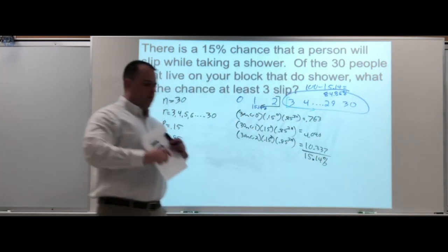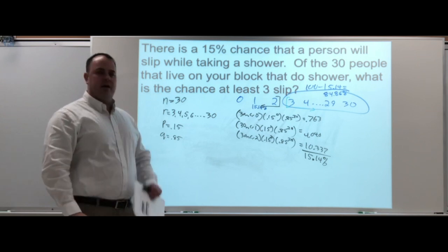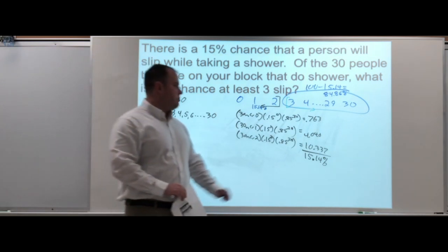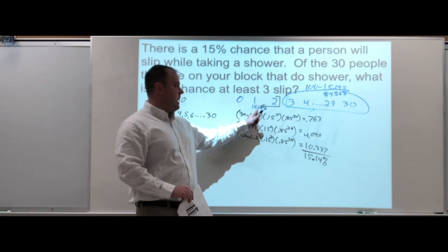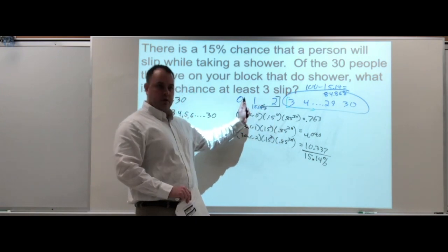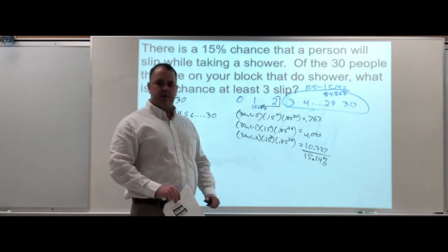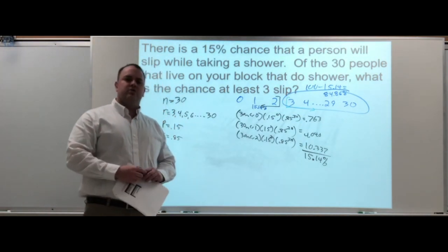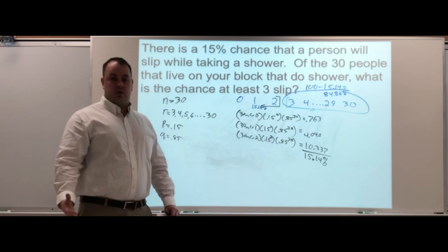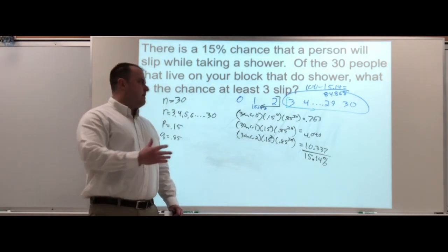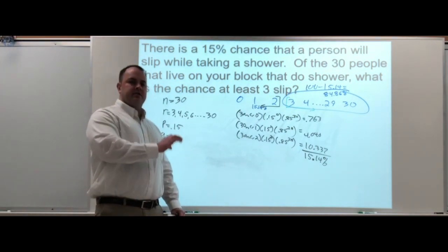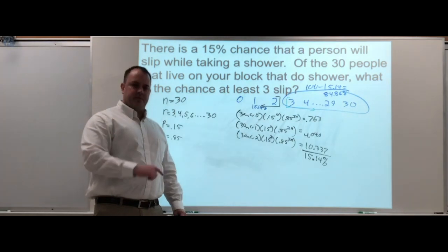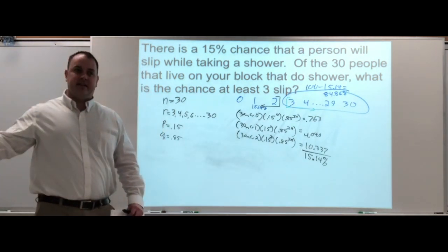That 84.86 percent is the probability of at least three. We used the property of complement. We found the opposite, what values we weren't looking for, and subtracted it from 100 percent. That's a shortcut. Yes, you could have done three to thirty, but working smart not hard—zero, one, and two subtracted from 100 found us that same probability.